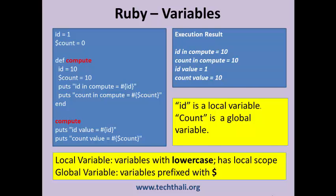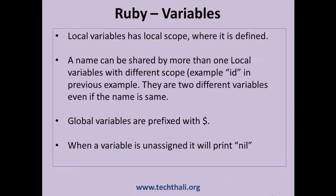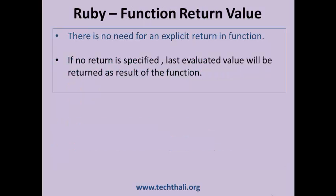Local variables have local scope and are represented in lower case. Local variables can share the same name in different scopes — in the previous example, there are two variables with the same name id. Global variables are prefixed with a dollar sign. When a variable is unassigned it will print nil. Ruby does not impose an explicit return statement as in Java; if no return statement is specified, the last evaluated value will be returned.